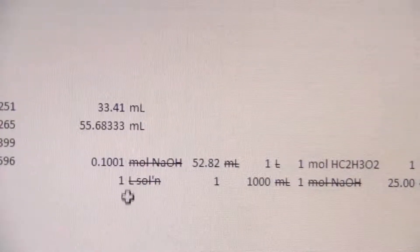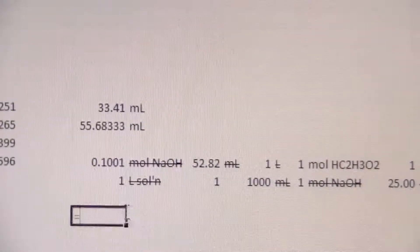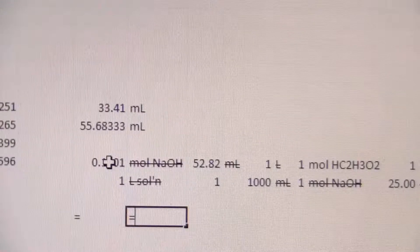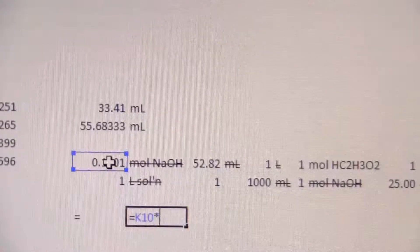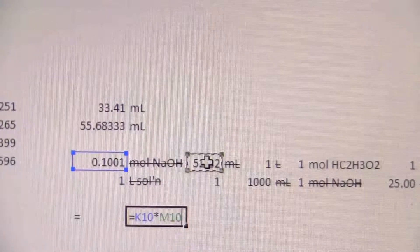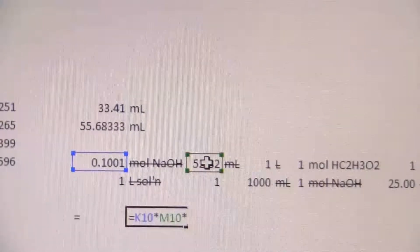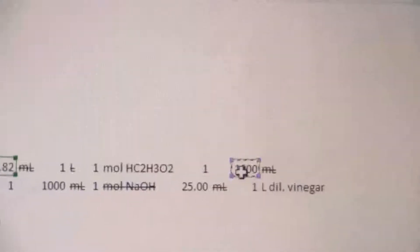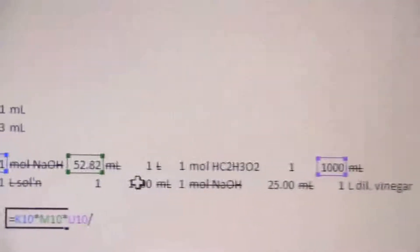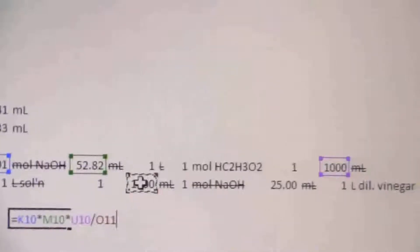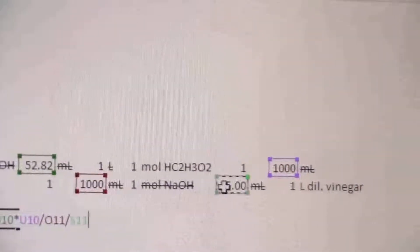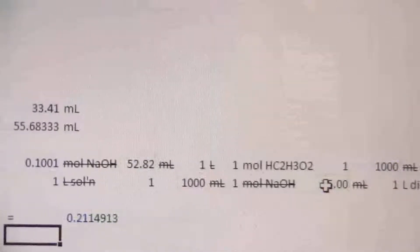All right, so let's just run through this calculation. We have 0.1001 times 52 times 1000, and then I'm dividing by 1000, so I really don't absolutely have to do that part, and I'm dividing again by the 25 milliliters.